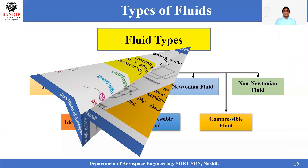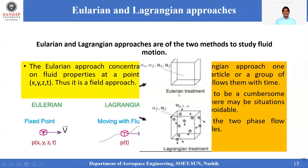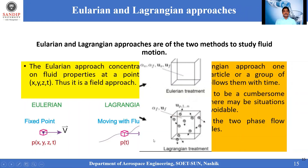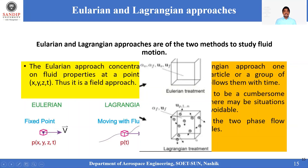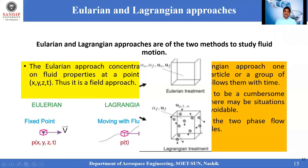Here you can see: in the Eulerian treatment the control point is fixed, whereas in the Lagrangian treatment there are a larger number of particles being tracked. More particles are considered in the Lagrangian approach compared to the Eulerian approach, where it is a single fixed point moving with the fluid.